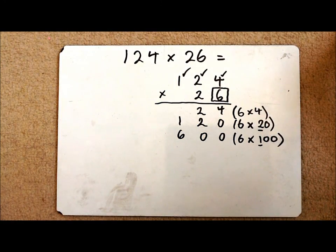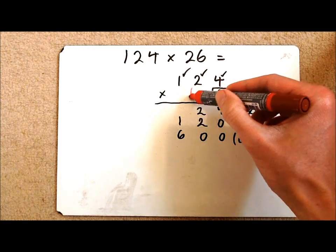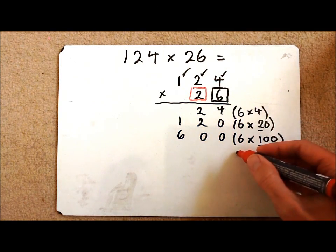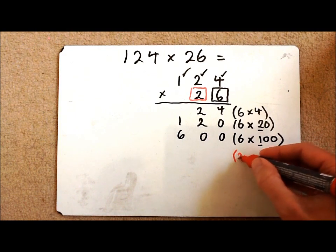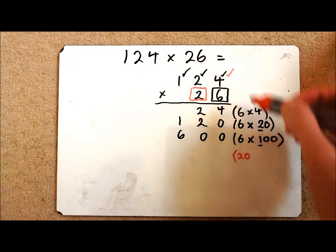But the sum is 124 times 26. So I'm just going to change colour and now I'm going to multiply everything by the 2. But actually it's a 20 because it's in the tens column. So I'm now doing 20 multiplied by the first digit again.